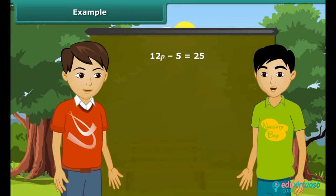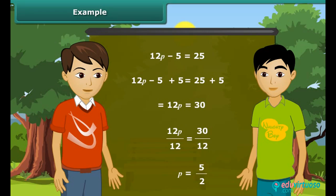Ajay, can you solve this equation? Yes. To get P on the left hand side, we will add 5 to both the sides. We get 12P is equal to 30. Now divide both sides by 12. We get the answer P as 5 upon 2. Very good. Do you know that we can solve these problems by transposing also?